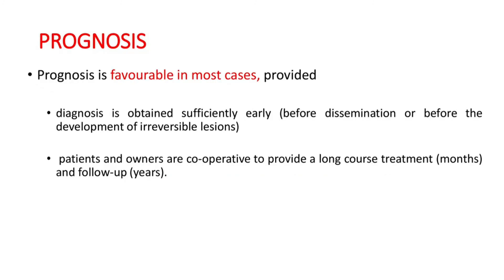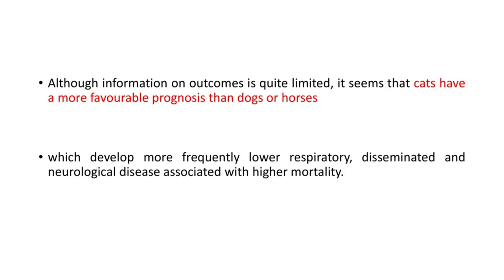Regarding prognosis, it is favorable in most cases provided diagnosis is obtained sufficiently early, before dissemination or development of irreversible lesions, and the patient's owners are cooperative to provide a long course of treatment for months and follow-up for years. Although information on outcomes is quite limited, cats appear to have a more favorable prognosis than dogs or horses, which more frequently develop lower respiratory, disseminated, and neurological disease associated with higher mortality.